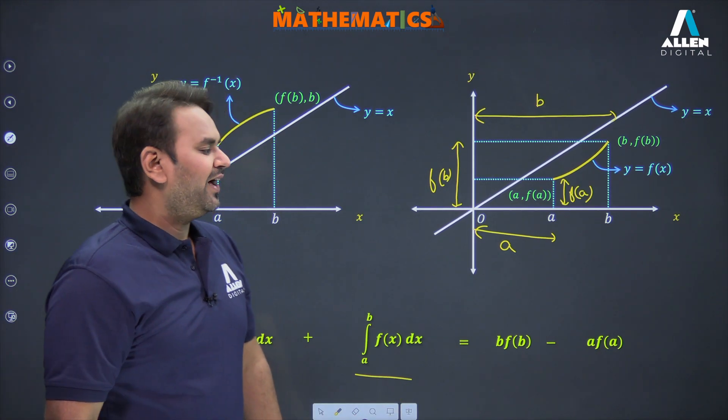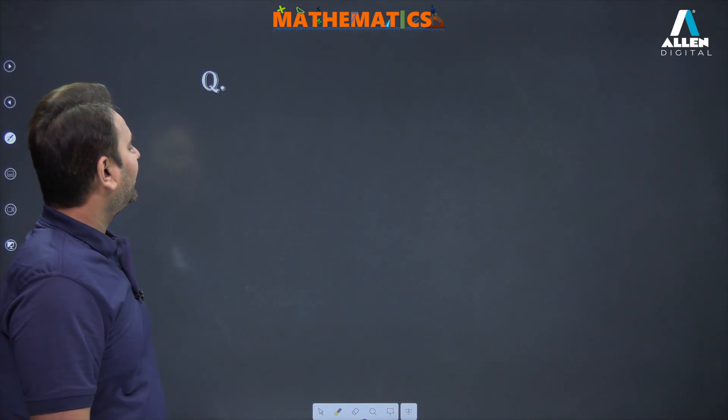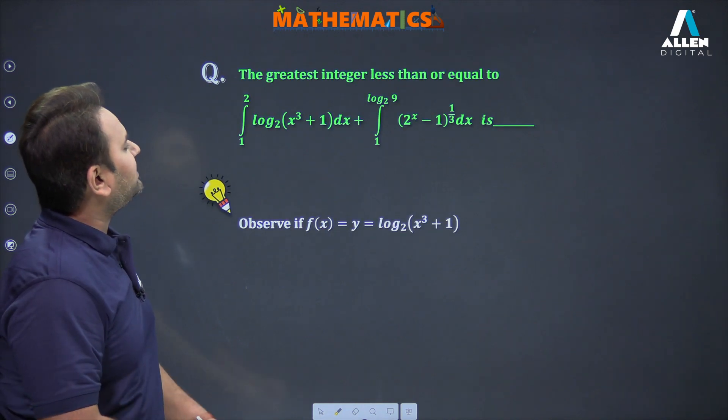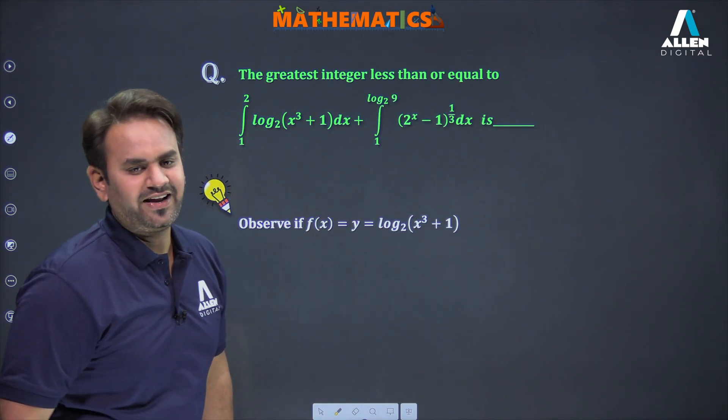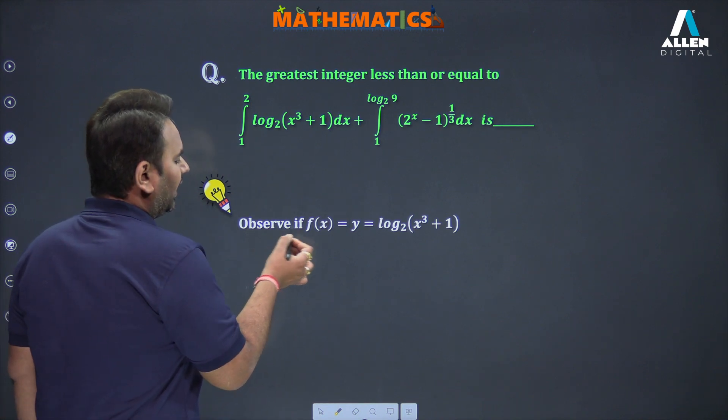So hopefully you understood the proof as well. Let's see a question. The question is: find the greatest integer less than or equal to this plus this.